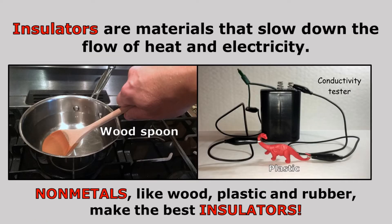But insulators are materials that slow down the flow of heat and electricity. And non-metals like wood, plastic, and rubber make the best insulators. You can see here that this wood spoon is in the hot water but it's not too hot to touch, because wood is an insulator of heat. So even though the wood spoon is inside the hot water, it takes a long time to heat up. And electricity is not flowing through the plastic dinosaur very easily, so you can see the light bulb is not glowing on our conductivity tester.